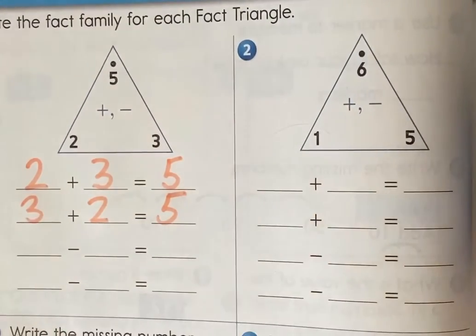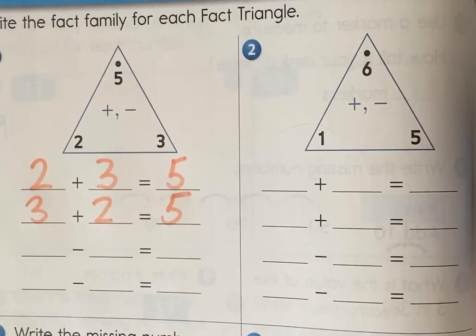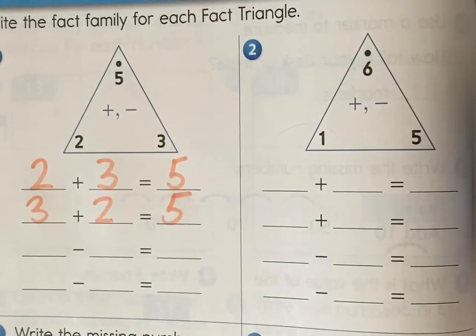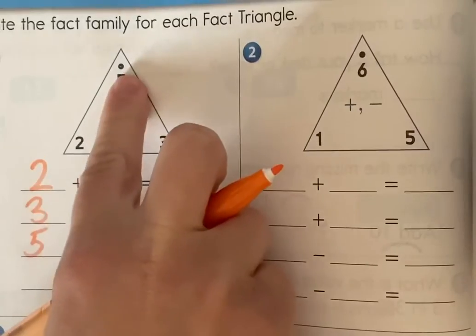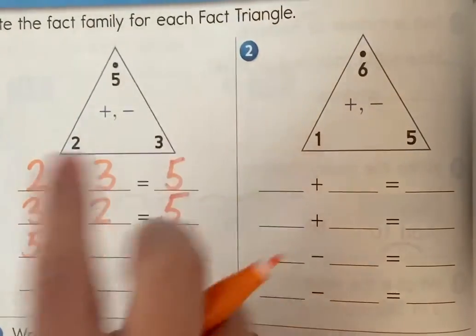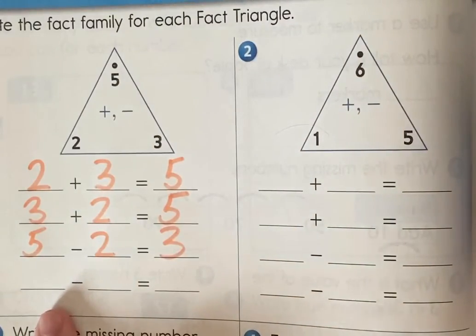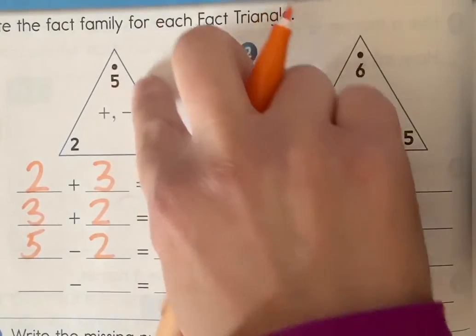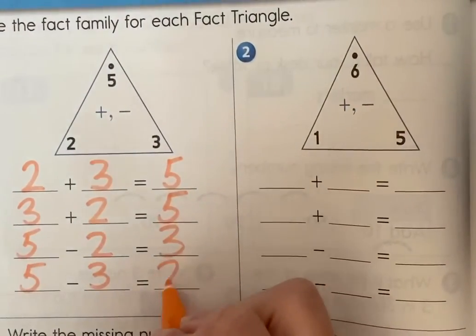Now I see that we have some minuses so we need to do some subtraction problems. When we're doing subtraction with the fact family we always start with the biggest number. Five minus two equals three, and then I have one more subtraction problem to do. So since I already did five minus two equals three, I'm going to go the other way. Five minus three equals two.